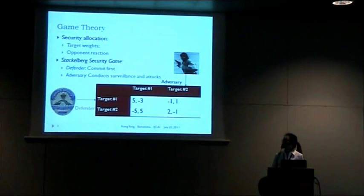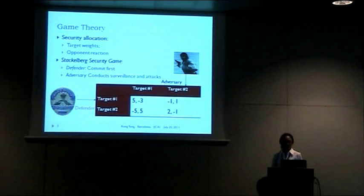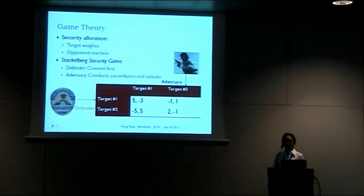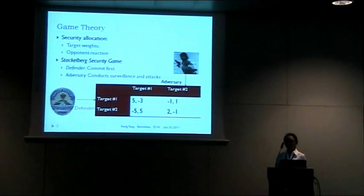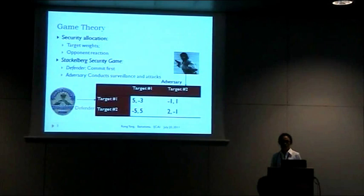Game theory provides a very nice framework to model the strategic interaction between the defender and the adversary. Specifically, a Stackelberg game, where we have two types of players. We have the defender placed as a leader who acts first, and then we have the adversary placed as the follower, who will observe the leader's strategy and then respond to it.